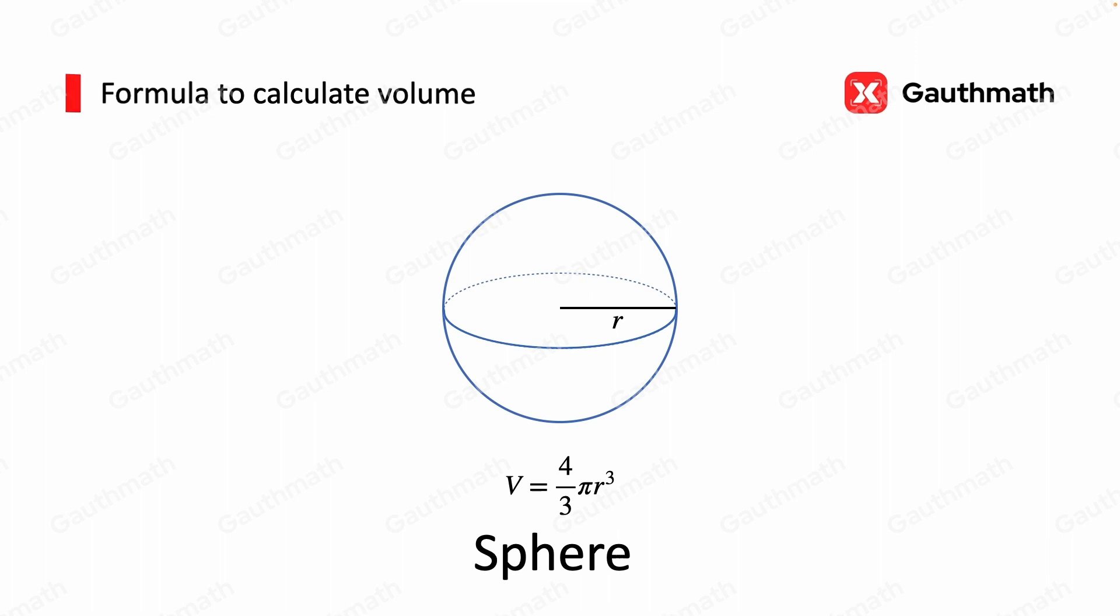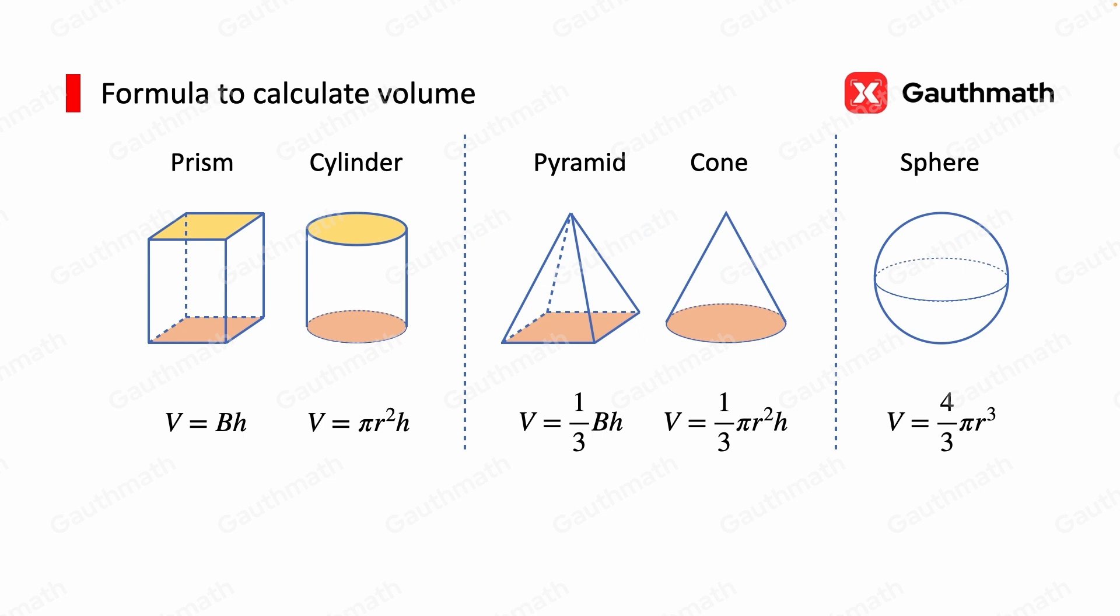Here's a summary of the formulas we have just gone through. For the prism and cylinder, the volume is equal to base times height. Of course, when we have a cylinder, the area of the base is pi R squared, since the base is a circle. And for pyramid and cones, the volume is equal to one-third of the base times height. And finally, for the sphere, the volume equals 4 over 3 times pi R to the third.